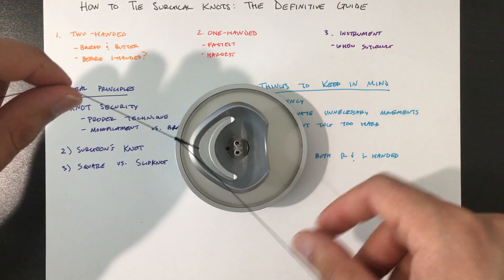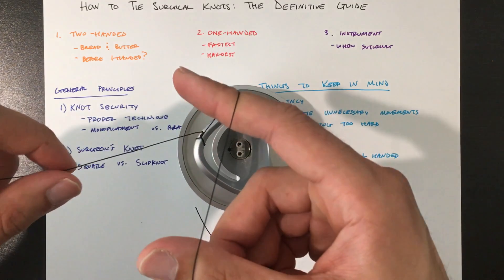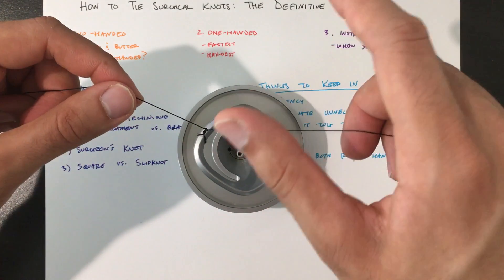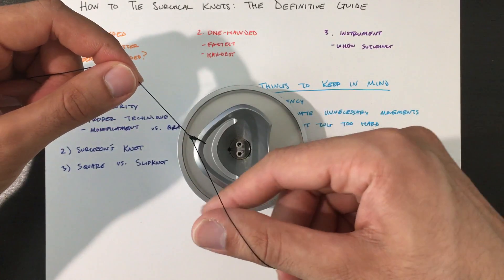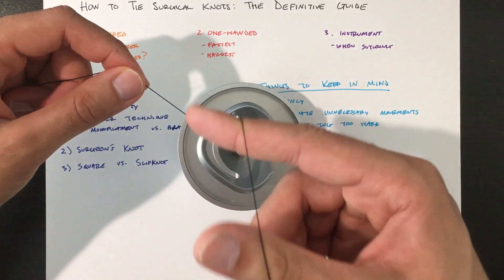So once you do the book, now you do the gun. So to do the gun, wrap it around your thumb first, then your index finger like this.